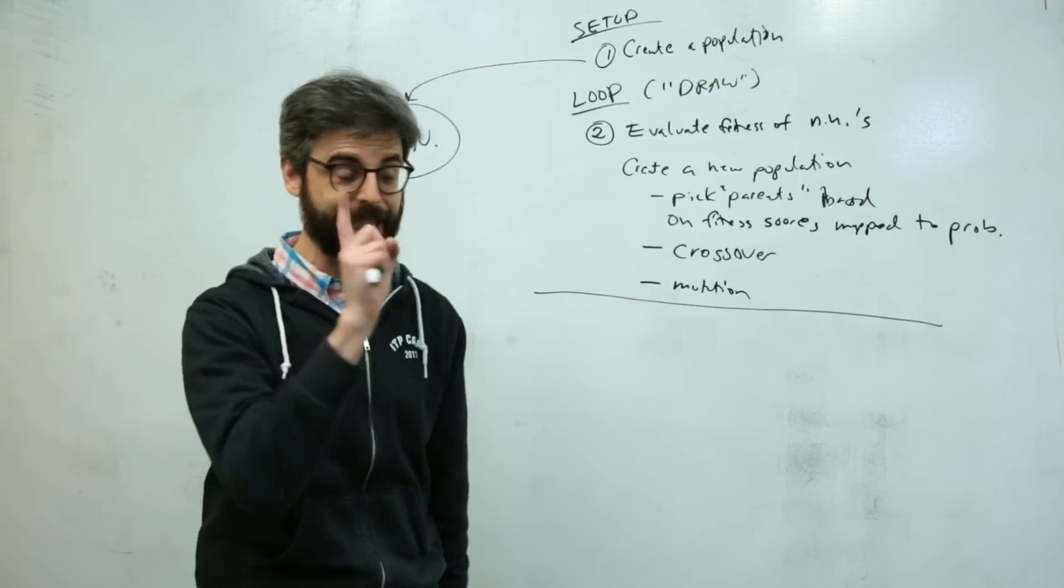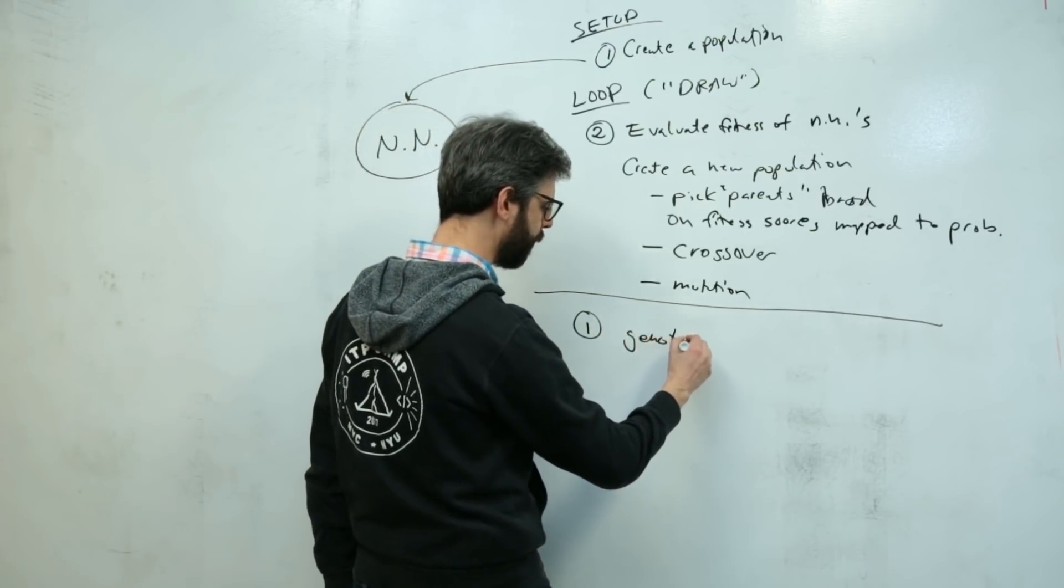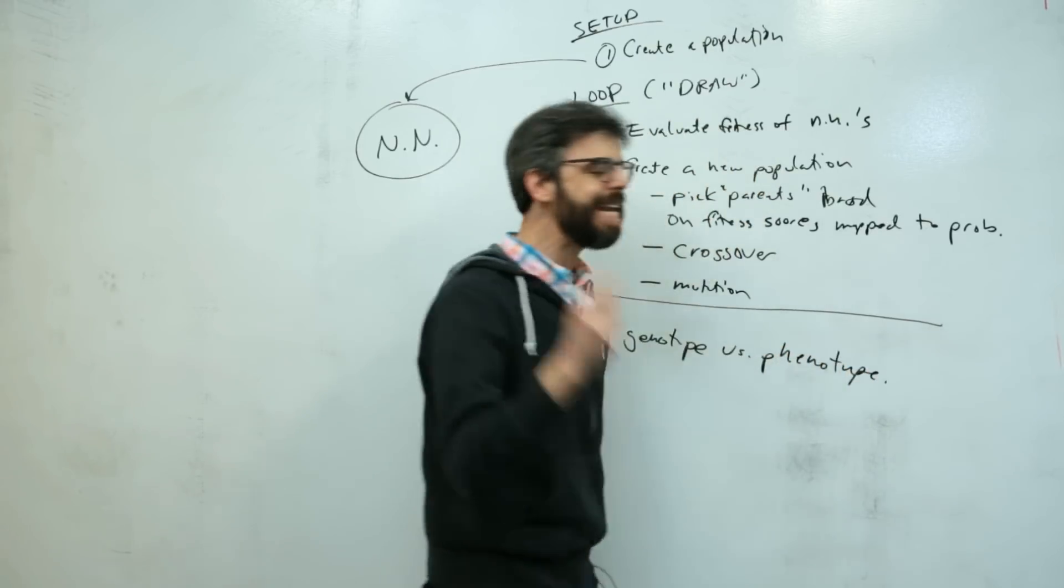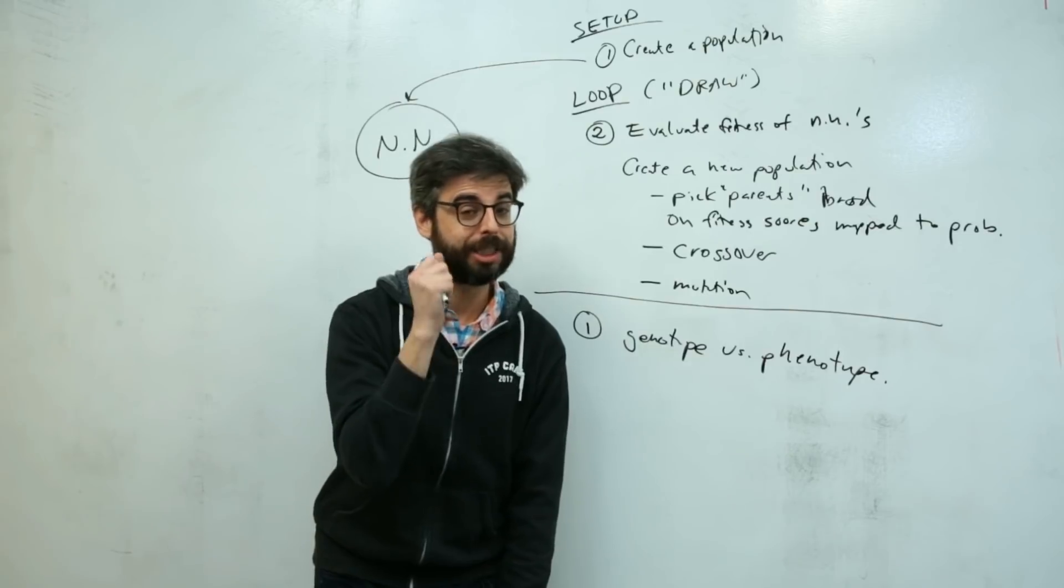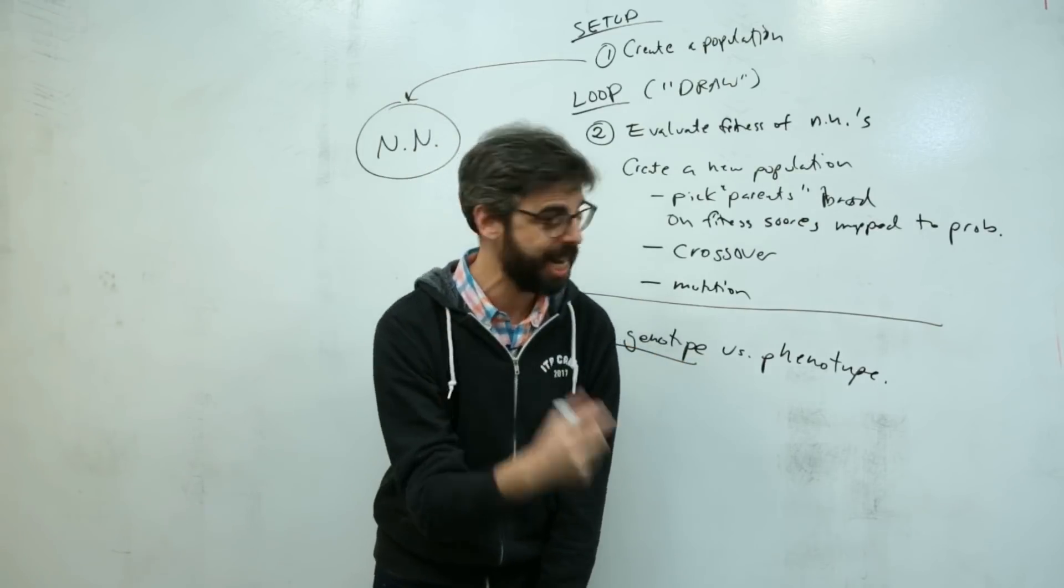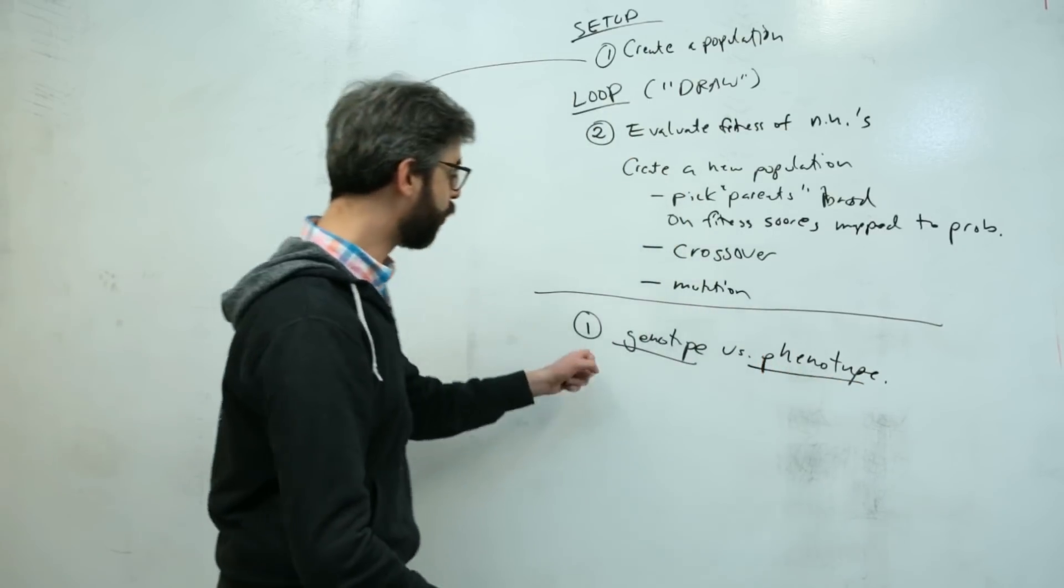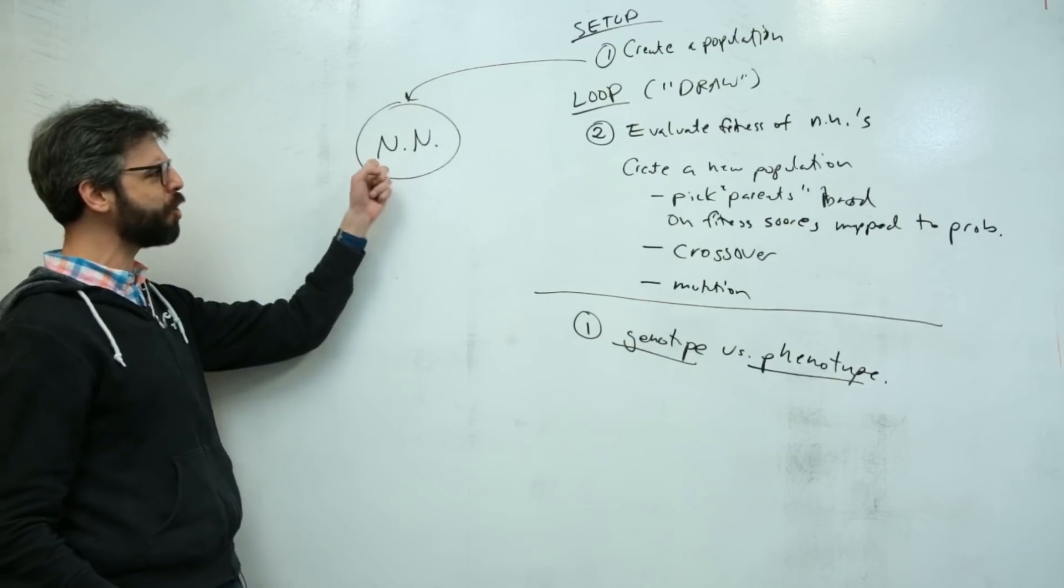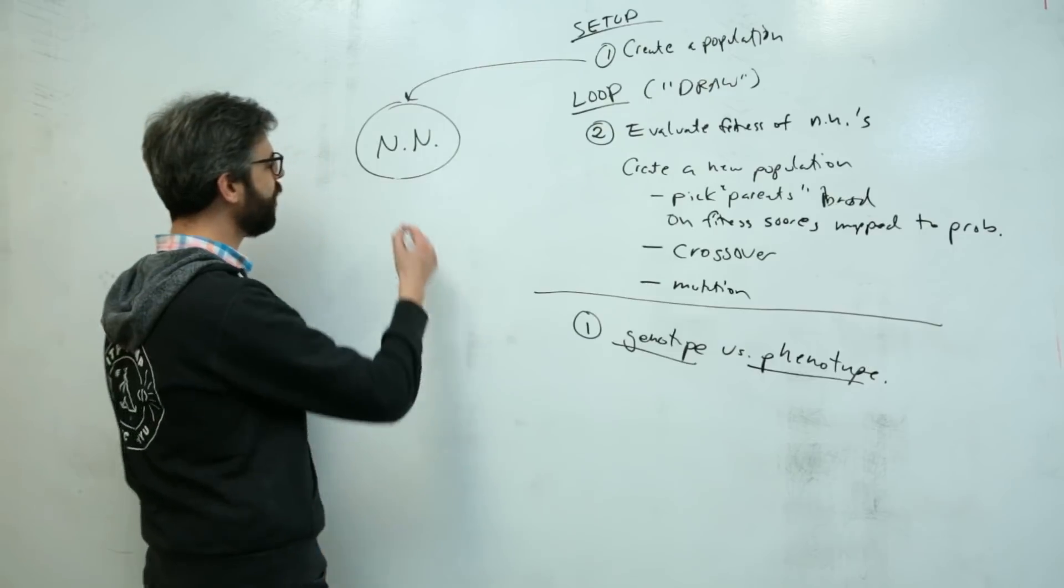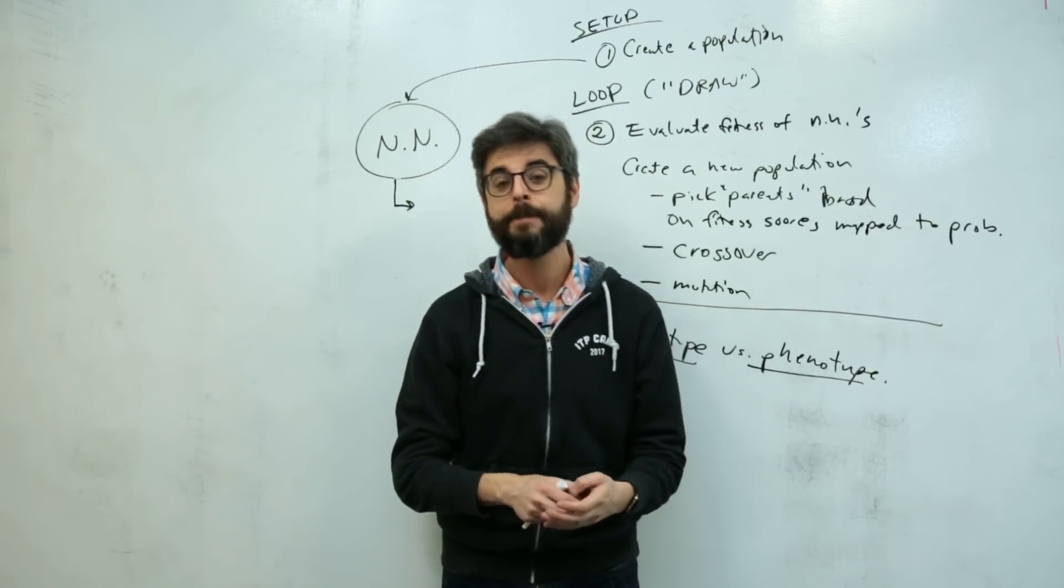Number one is this idea of genotype versus phenotype. What is that so-called digital DNA, the genotype? What is the data of that DNA and what does that data do? How does it express itself into a system?